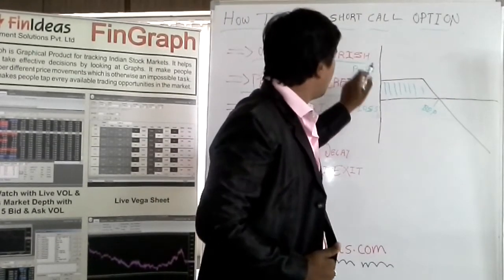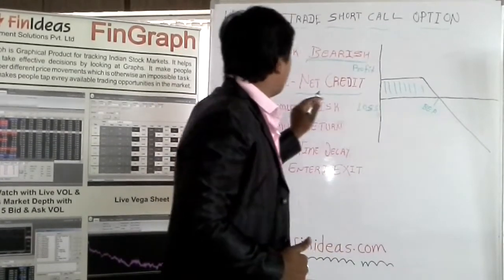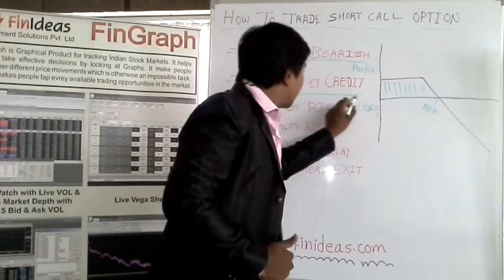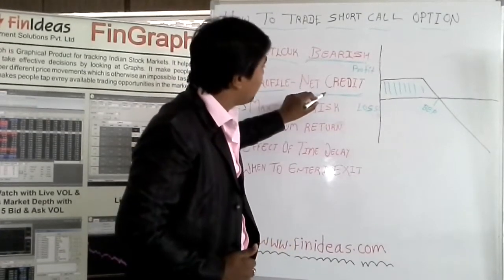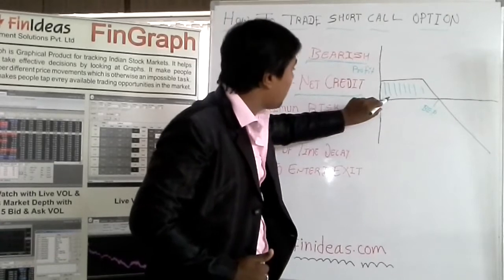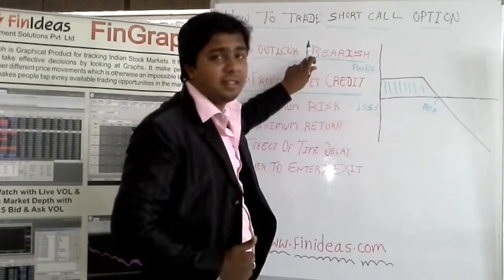That means on a bearish movement you are having a profit of net credit. That means you are receiving premium as a profit when market is bearish.